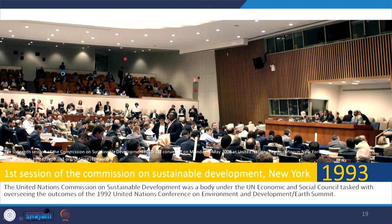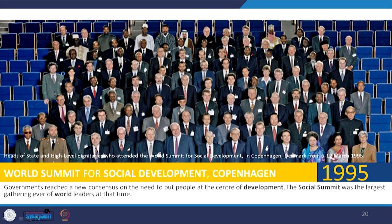Development cannot be at the cost of environment, and environment cannot be compromised — that was the underlying theme. For the first time everybody together started discussing about this. In 1993, the first session of the Commission on Sustainable Development took place in New York, discussing the outcomes of the 1992 Rio de Janeiro conference and putting them into tangible, action-oriented plans. In 1995, the World Summit for Social Development was held in Copenhagen and it was realized that we just cannot talk about environment — people need to be put at the center of development. So the social dimension of sustainability started becoming stronger.